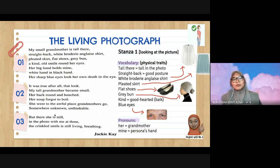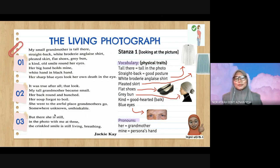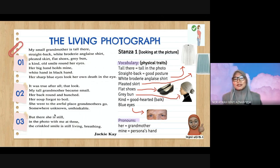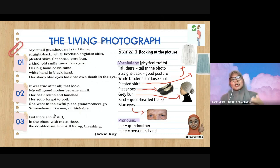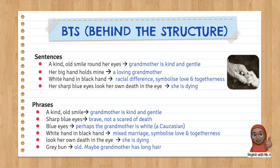'Blue eyes' means she has blue eyes — this happens not because of contact lenses but because of genetics. The pronouns we can see here: 'grandmother,' 'her' refers to grandmother, 'mine' refers to the persona's hand. Let's take a look at the structure behind the sentence structure.